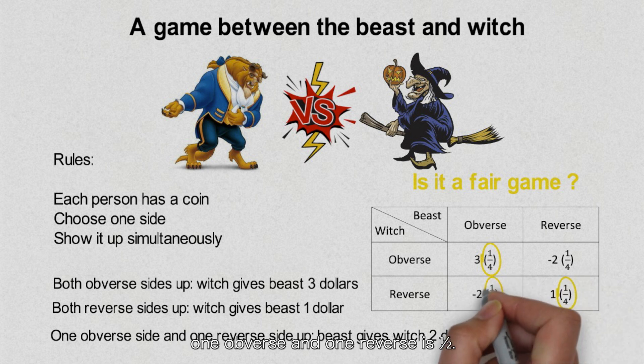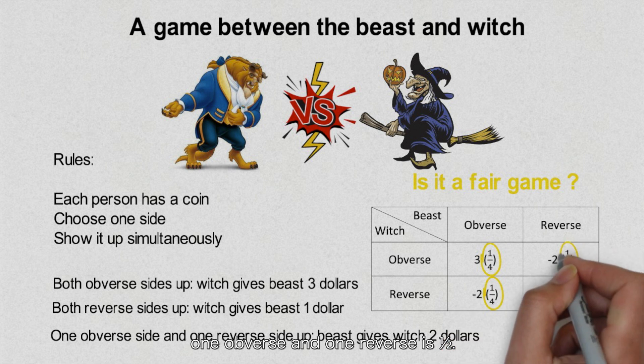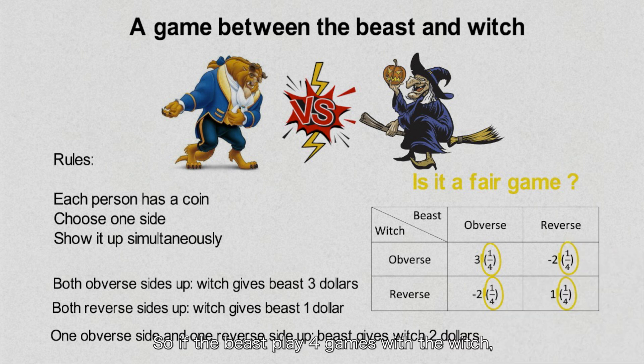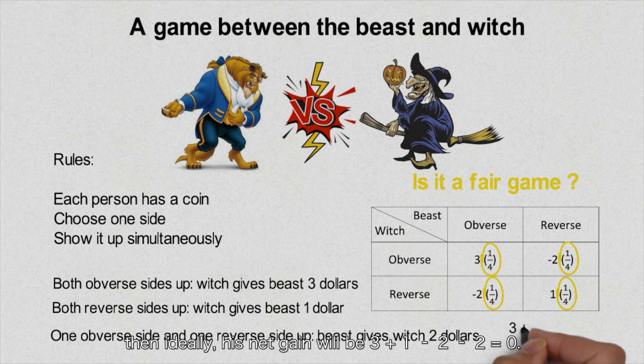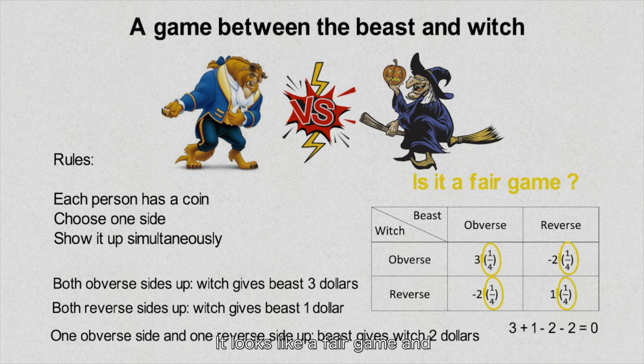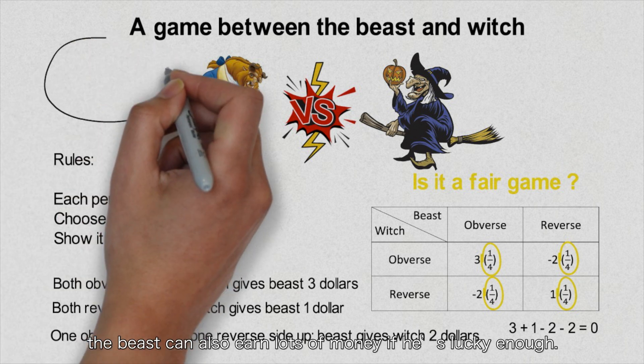2 reverse sides facing up is also 1 quarter. 1 obverse and 1 reverse is 1 half. So, if the beast played 4 games with the witch, then ideally, his net gain will be 3 plus 1 minus 2 minus 2 which equals 0. It looks like a fair game and the beast can also earn lots of money if he's lucky enough.